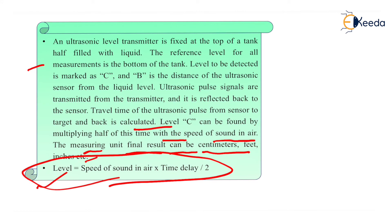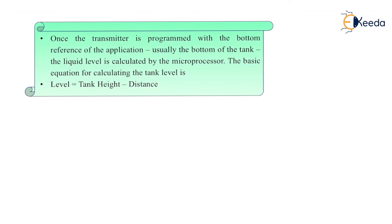The ultrasonic pulse signals are transmitted from the transmitter and reflected back to the sensor. The travel time is measured and used to calculate the level of the liquid. Once the transmitter is programmed with the bottom reference — usually the bottom of the tank — the liquid level is calculated by the microprocessor using the basic equation: tank level = tank height minus distance.